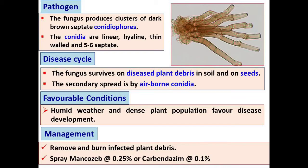In the disease cycle, this fungus survives in dead plants or on diseased plant debris of the previous crop in soil, and also on seed. The secondary source of infection is always by means of airborne conidia. This fungus favors humid weather and dense plantation — these are the predisposing factors responsible for development of this disease.